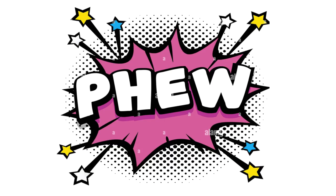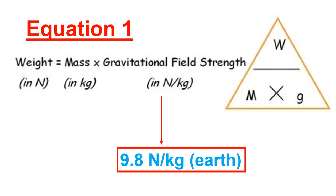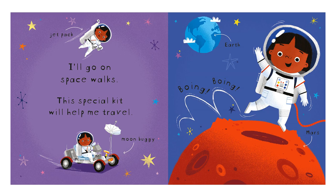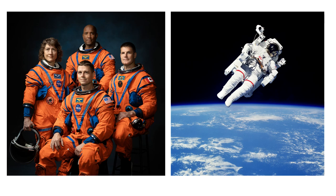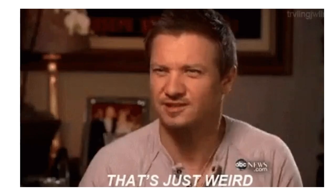Mass is the amount of matter in an object — it does not change with gravity and is measured in kilograms. Weight does change with gravity and is measured in Newtons. The equation is: weight = mass × gravity, where the strength of gravity is 9.8 N/kg (given in the exam). At foundation level, this is rounded to 10.